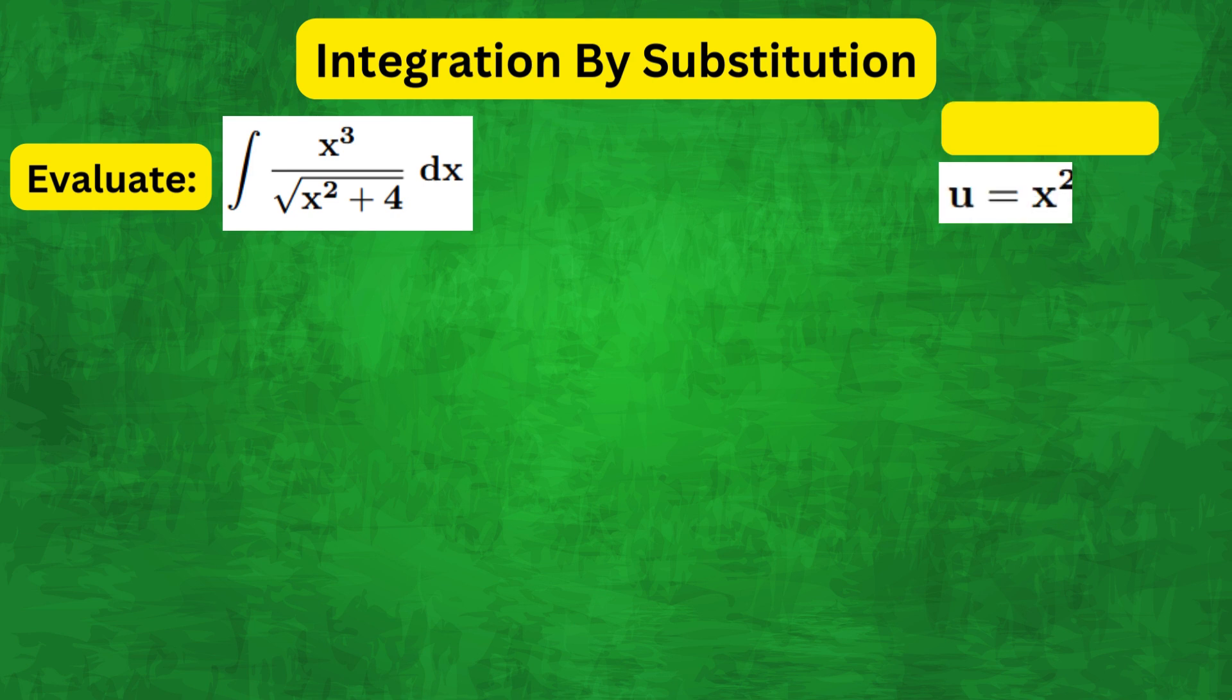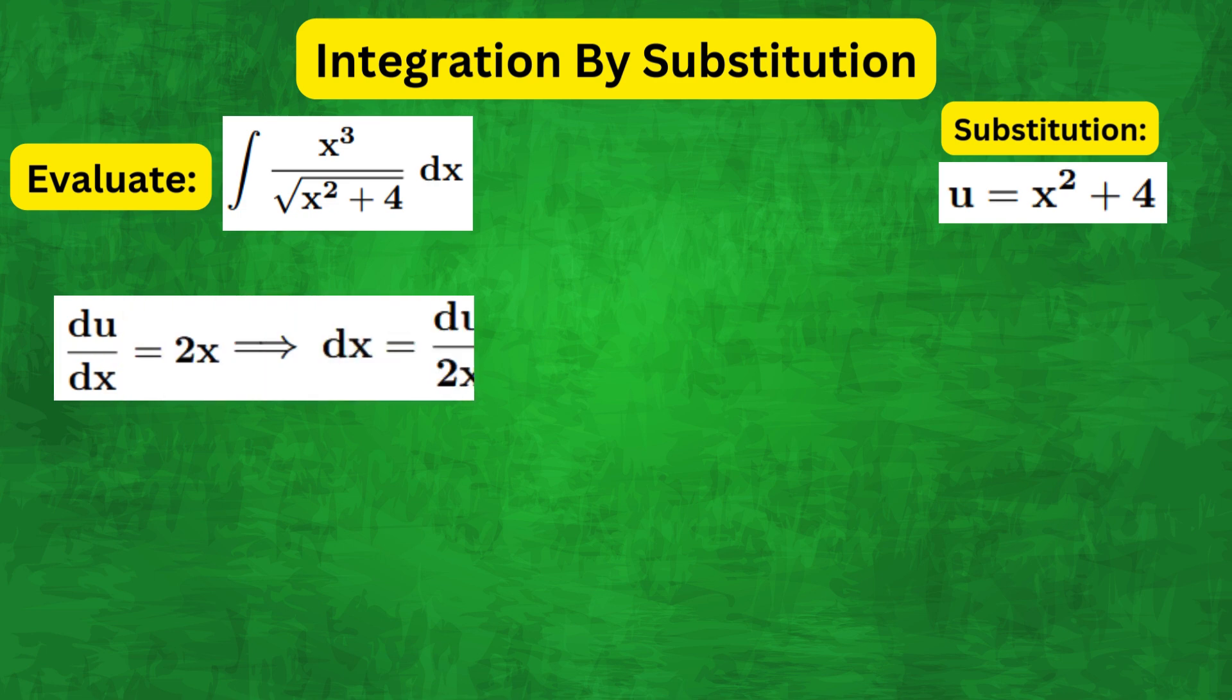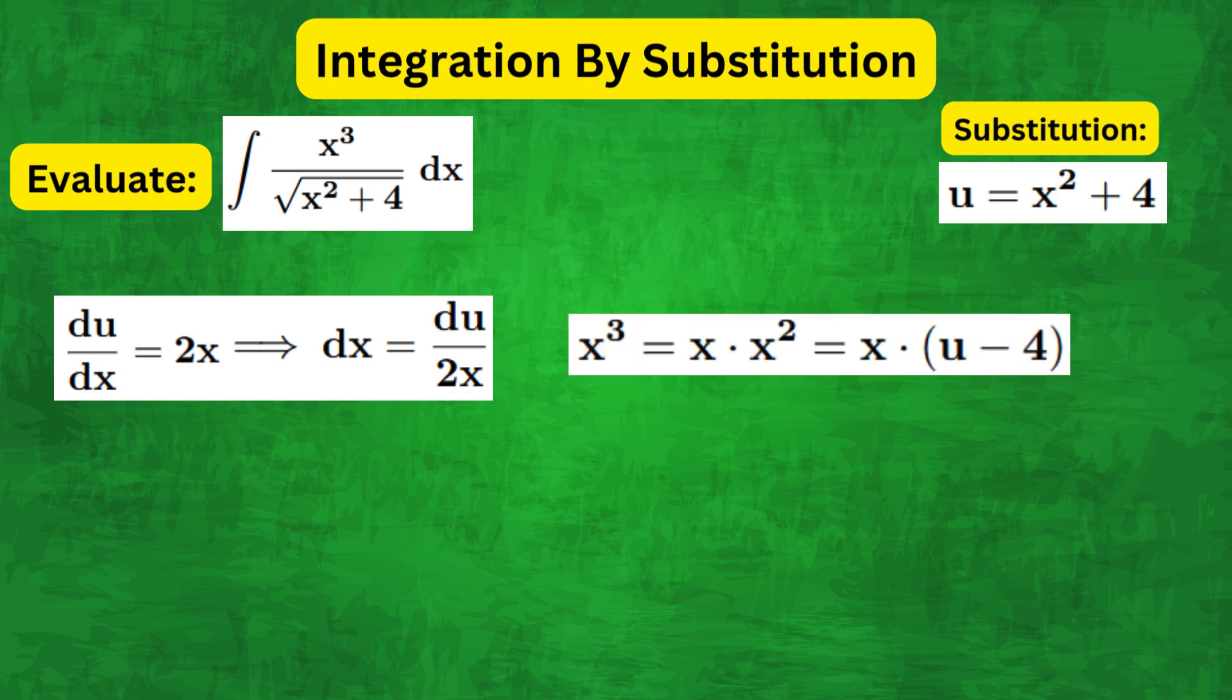Now let us choose u equals to x squared plus 4. Then du by dx equals to 2x, and therefore dx is equal to du over 2x. Now we can rewrite x cubed as x times x squared, and notice that x squared equals to u minus 4.